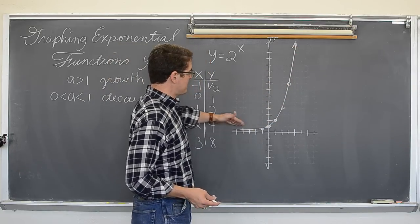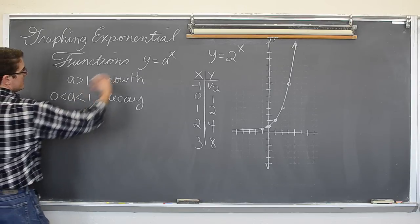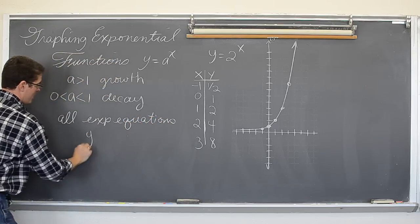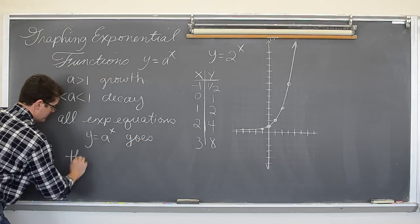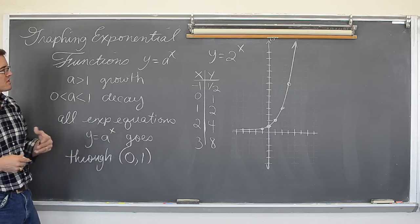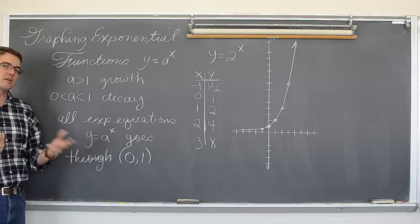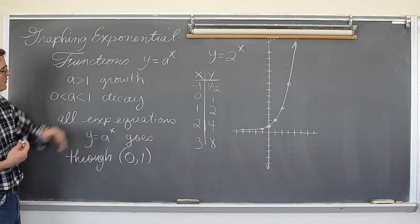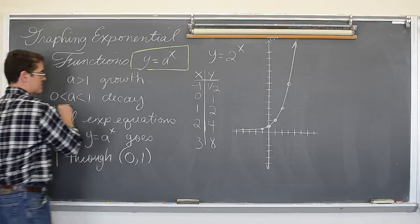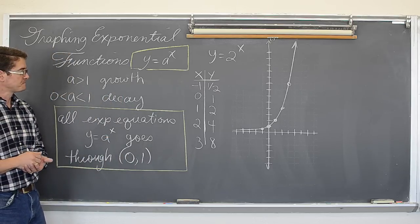Some other facts about this basic exponential growth graph: all equations in the form y equals a to the x go through the point zero, one. Now I am hesitating a little because we are about to do some transformations — vertical and horizontal translations and reflections — so we are going to change some of this. But in the most basic form, with no shifts, all exponential growth and decay equations pass through the value zero, one.